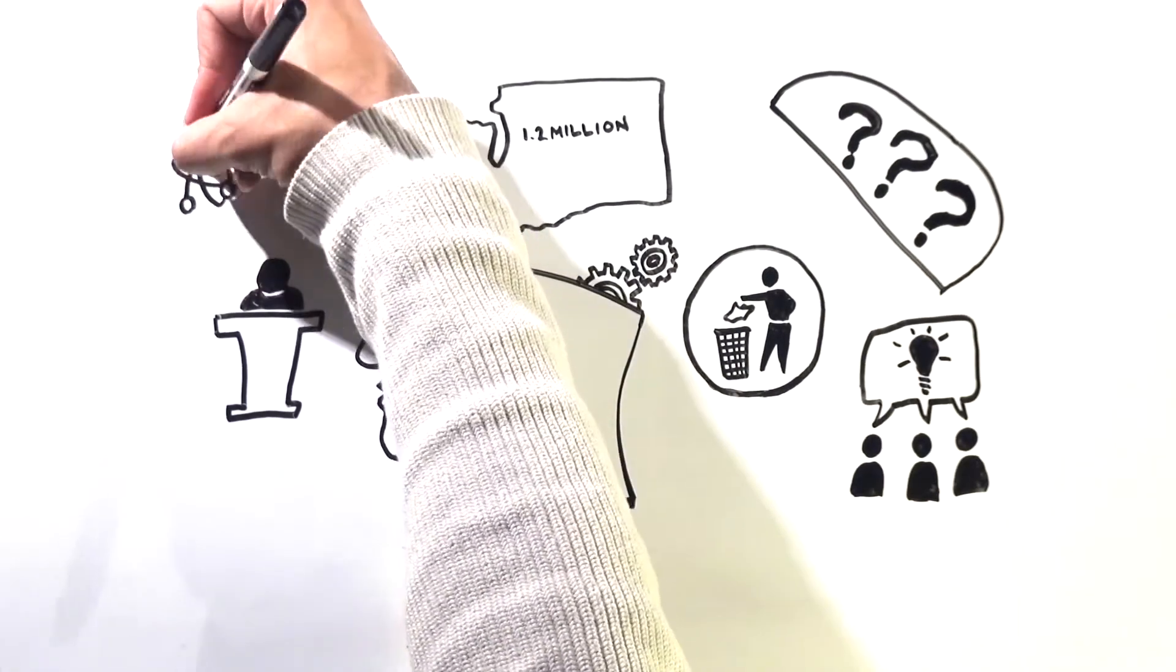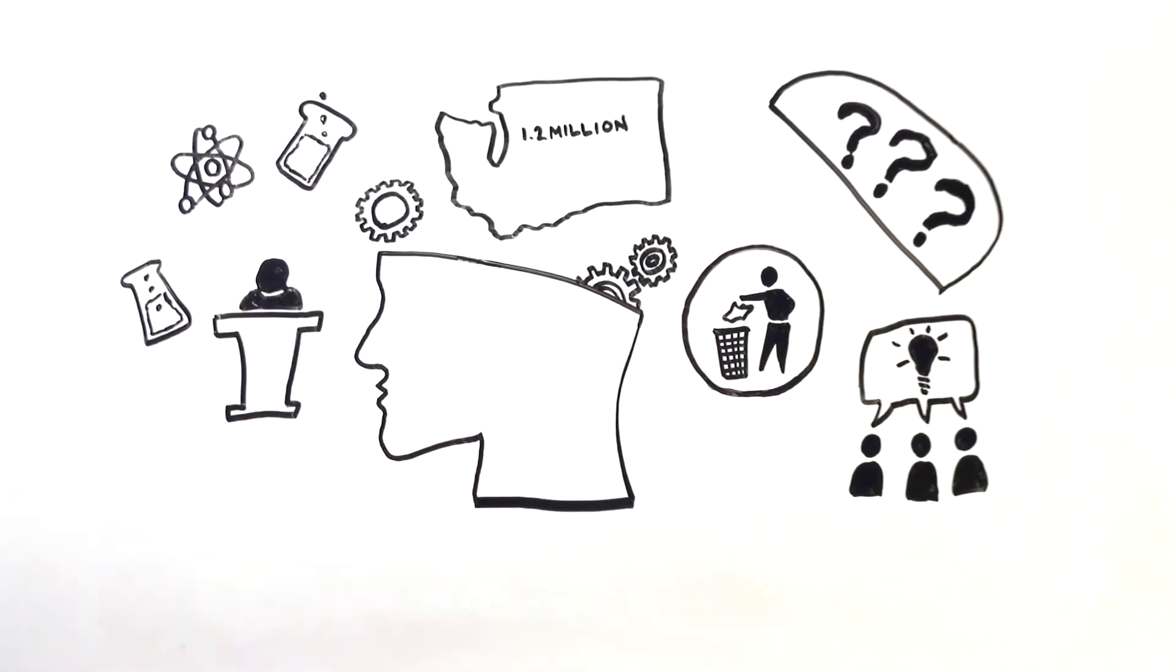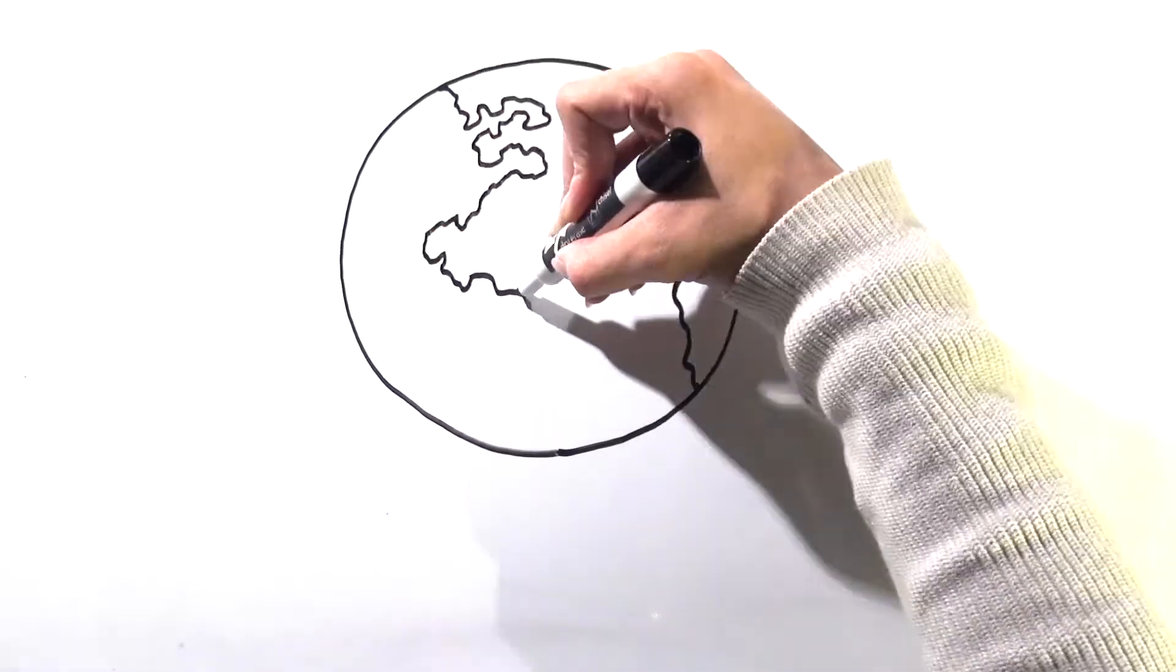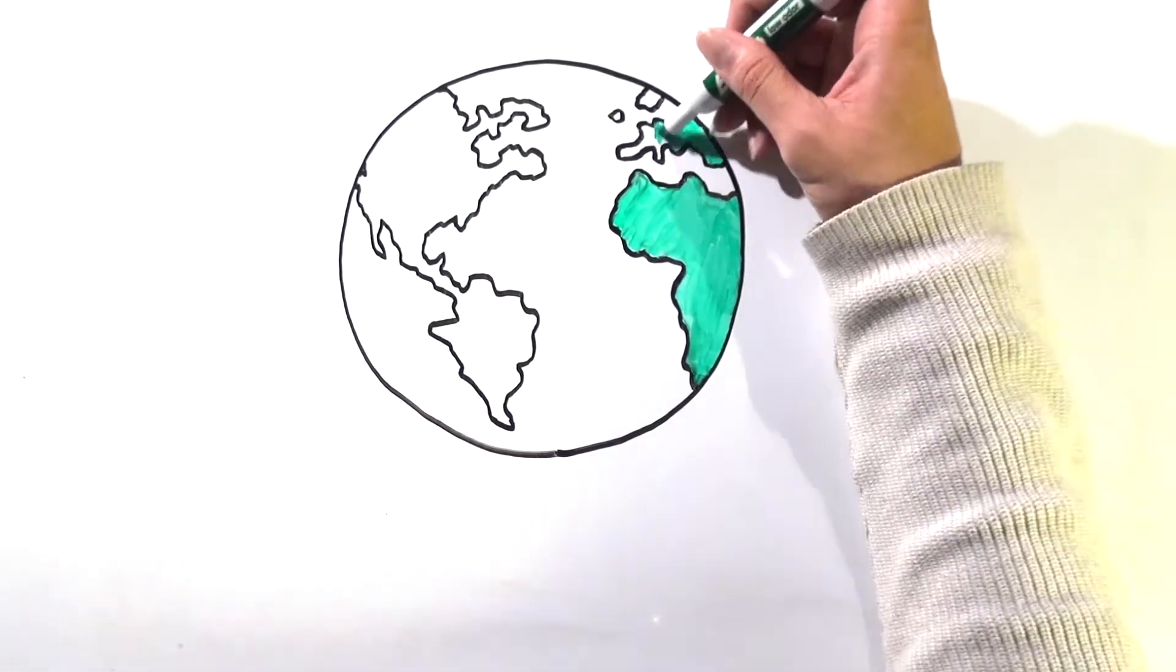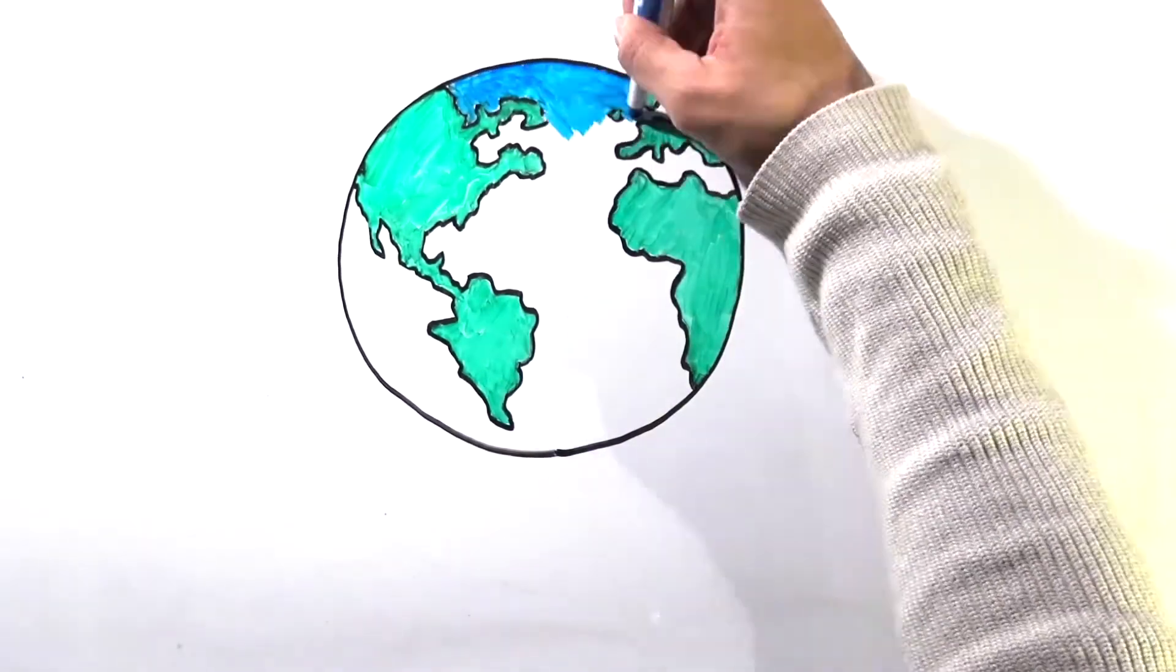That's 1.2 million students who will have engaged with hands-on, problem-based learning and who are educated on the science behind environmental issues like climate change. Most of all, that is 1.2 million students who will feel equipped to take on whatever environmental challenge as they move on to advocate for their local communities.